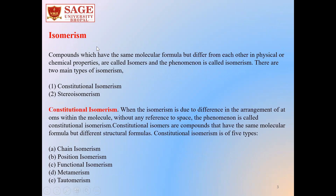What is isomerism? Compounds which have the same molecular formula but differ from each other in physical or chemical properties are called isomers, and the phenomenon is called isomerism. There are two main types of isomerism: constitutional isomerism and stereoisomerism. Constitutional isomerism is when the isomerism is due to difference in the arrangement of atoms within the molecule, without any reference to space. Constitutional isomers are compounds that have the same molecular formula but different structural formulas.